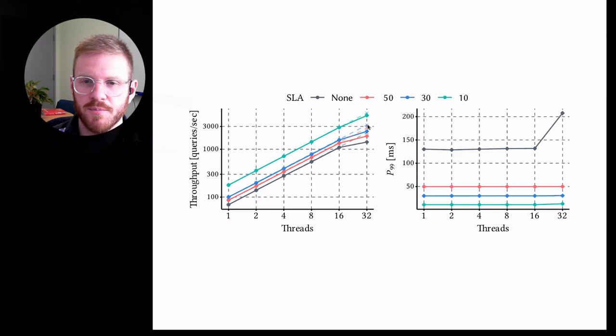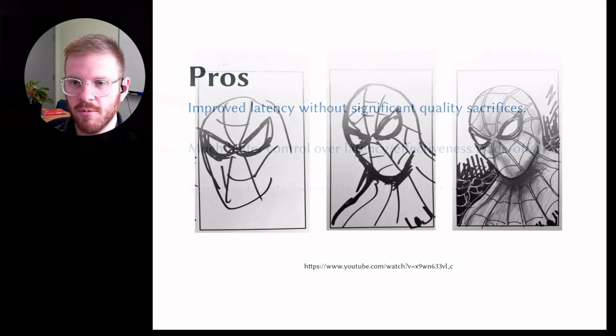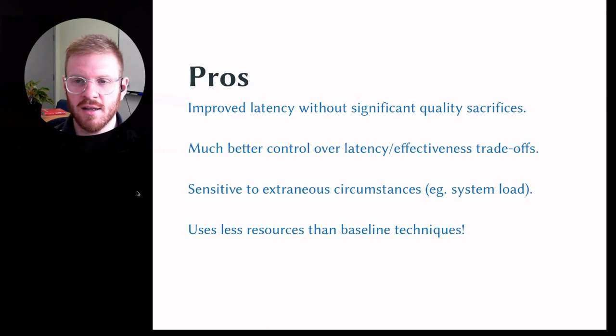The conclusion and takeaways here: we're able to make document at a time retrieval systems act in an anytime manner, which is something we weren't able to do up until now. That allows us to improve latency without significantly sacrificing quality. We can have much better control over latency and effectiveness tradeoffs. Our approach is even sensitive to extraneous circumstances. For example, if the system is under a high load, our algorithm is adaptive to that and can start shedding the amount of work that needs to be done. And it uses less resources than baseline techniques.